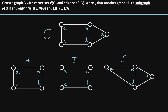Let's consider graph H. We can see that it has four vertices: A, B, C, and D. Each of these vertices belongs to the vertex set of G, so the vertex set of H is indeed a subset of the vertex set of G. We can also see that each of the four edges in graph H also belong to graph G, so the edge set of H is also a subset of the edge set of G. Because both requirements are met, we would say that H is a subgraph of G.